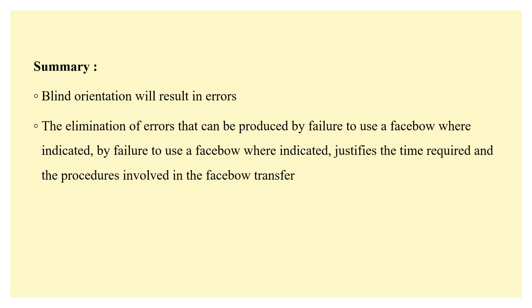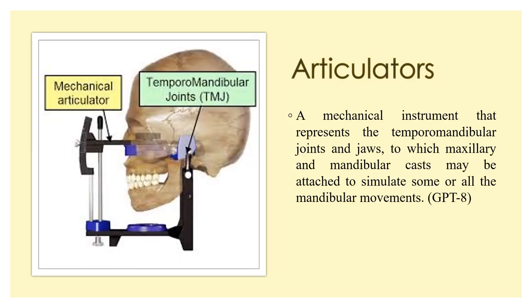To summarize: if you are not using a face bow and blindly orienting the jaw relation on your articulator, it will lead to small errors. The elimination of these errors is achieved by using a face bow where indicated. For complex cases like cast partial dentures, full mouth cases, or fixed partial dentures, a face bow is definitely indicated. Even though it is a complex procedure requiring manual skills, it definitely justifies the time taken to record the face bow.